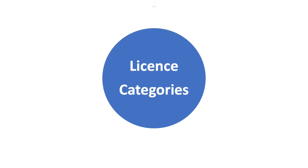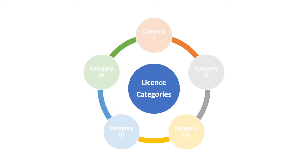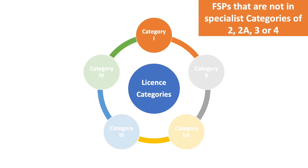Having learned about different financial products as defined in the FACE Act, we now turn our focus to license categories. The license categories are covered in more detail in the videos about licenses. There are five license categories. Category 1 is for FSPs who only give advice and render financial services — this applies to FSPs that are not in specialist categories 2, 2A, 3 or 4. If the business activities of an FSP do not fall under one of the specialist categories, then Category 1 license authorization will apply.